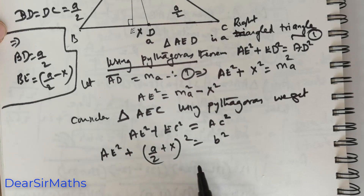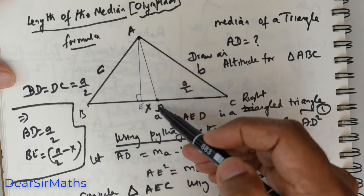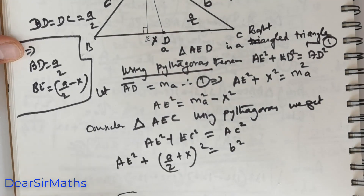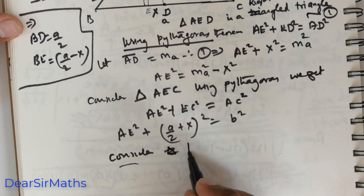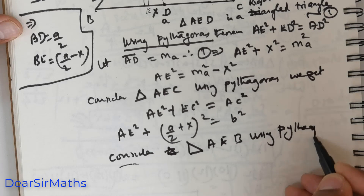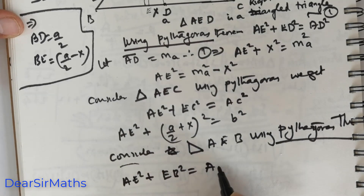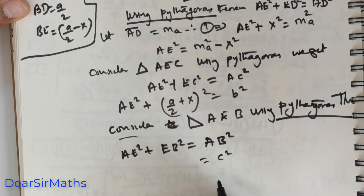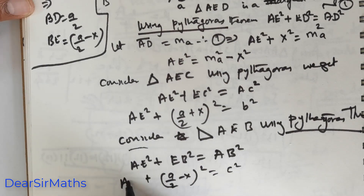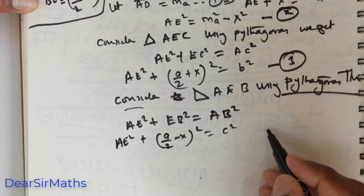Now consider triangle AEB. Again using Pythagoras, we get AE squared plus EB squared equals AB squared. AB squared is C squared, and BE is A over 2 minus X, that quantity squared. And we have AE squared as usual. So I can name these as equation 2, equation 3, and equation 4. All of these have AE featured in them.